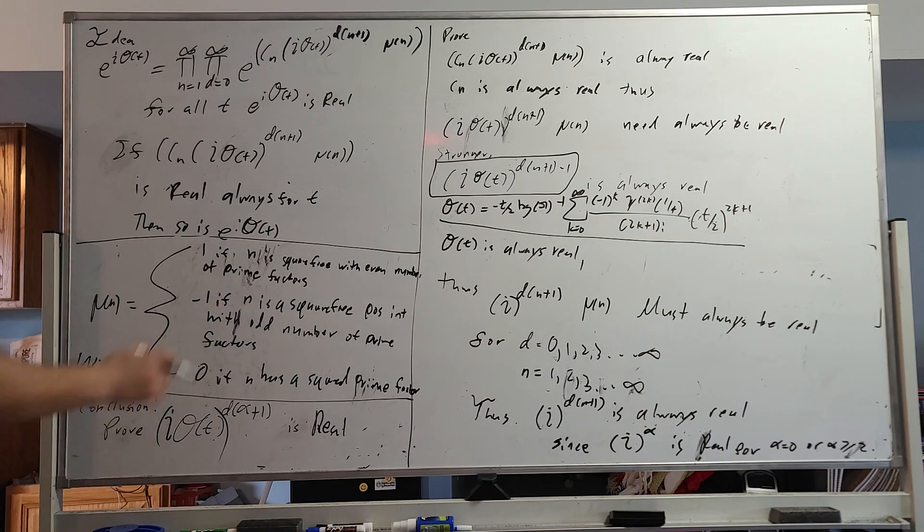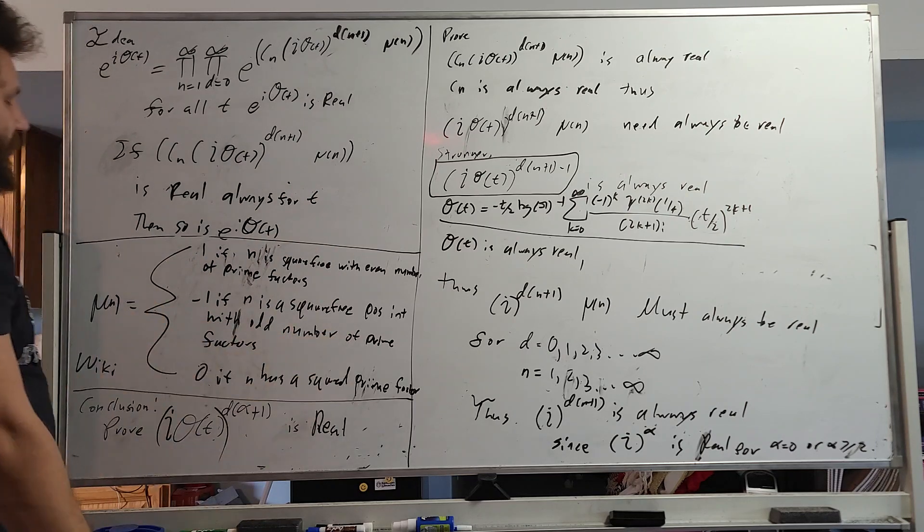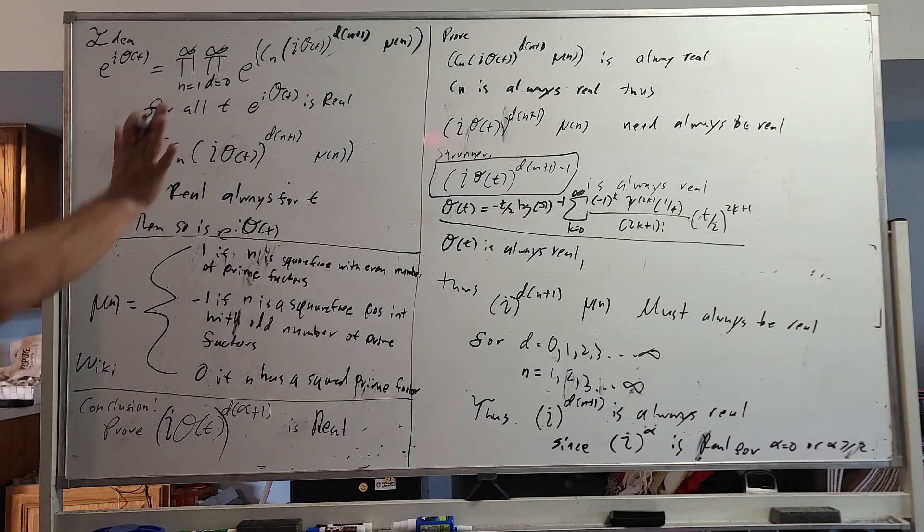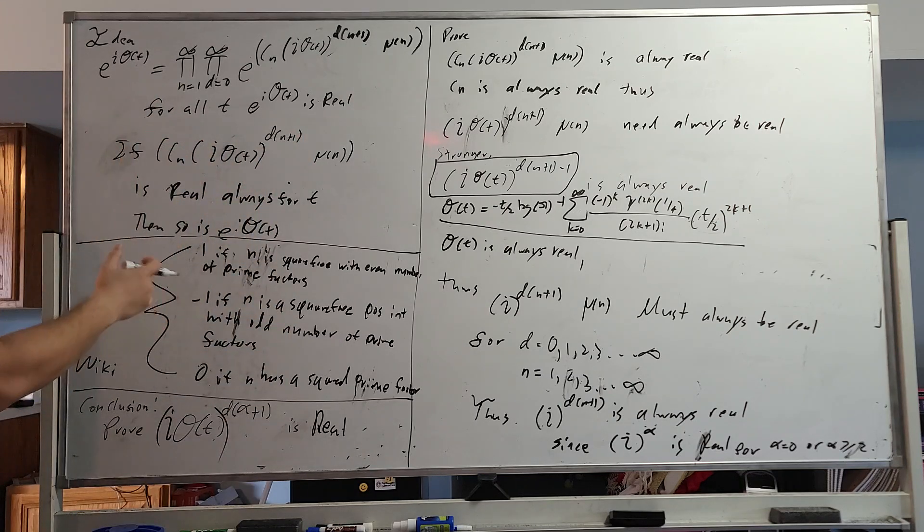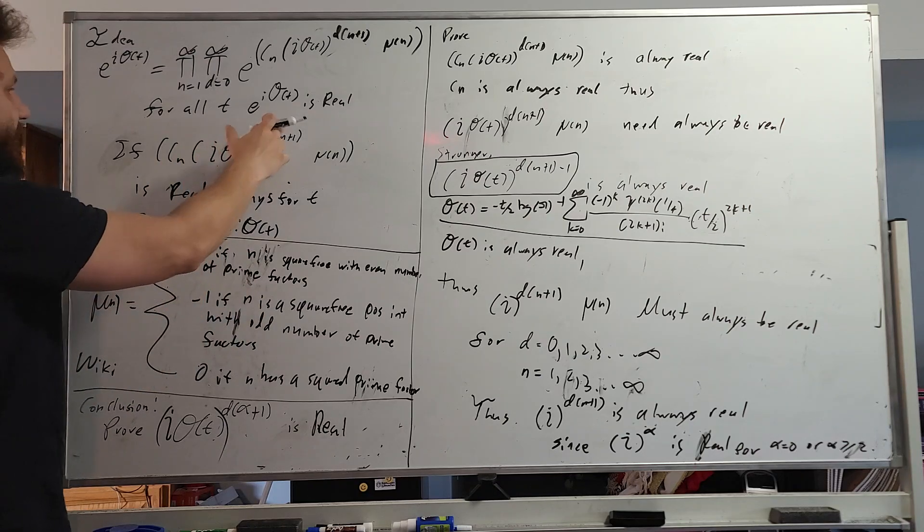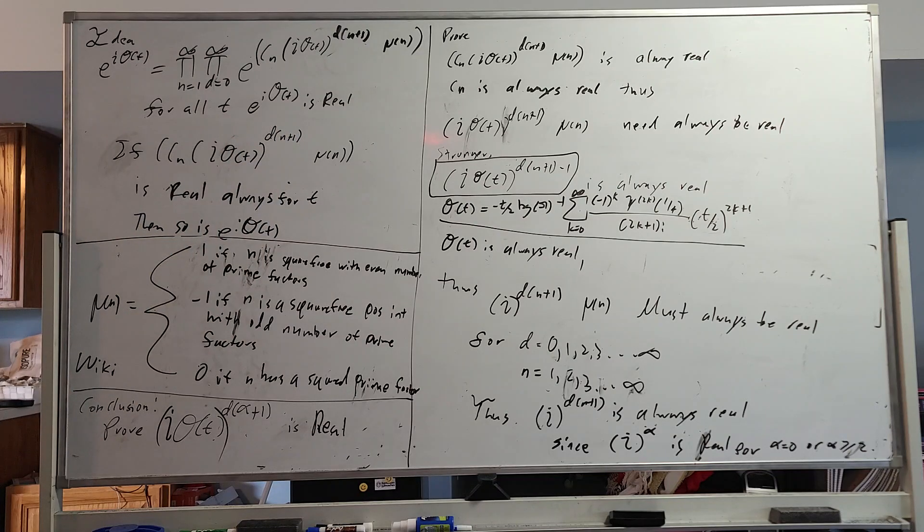Two things. One, the Mobius function is always real. Here's the definition of the Mobius function. Not too pertinent to go deep into, but I've written it out anyways. It's 1, negative 1, or 0. No matter what, you're good. So you can take it out. The cn, we talk about the coefficients of the Mittag-Leffler function being always real, finite products, so real numbers. You're good. So all you really have is this i theta t d times n plus 1.